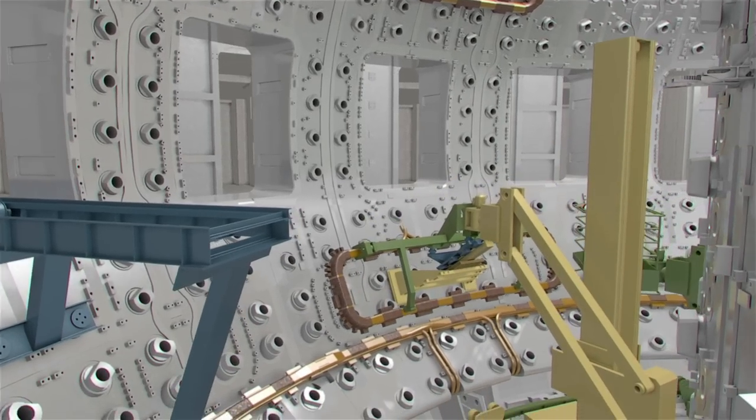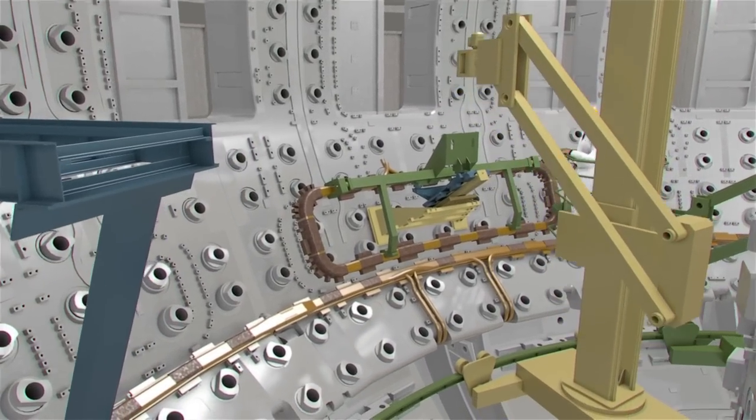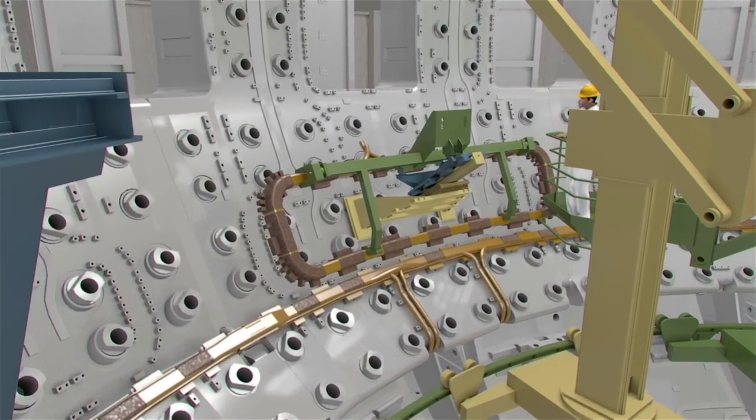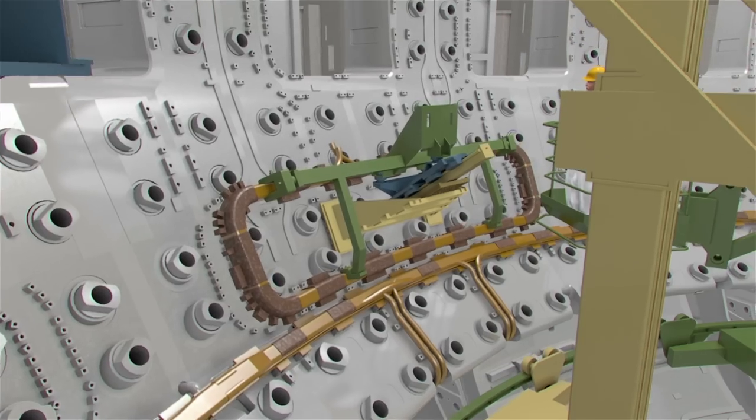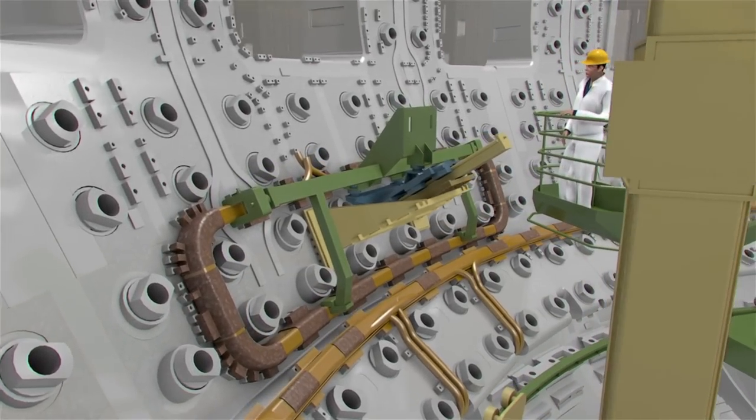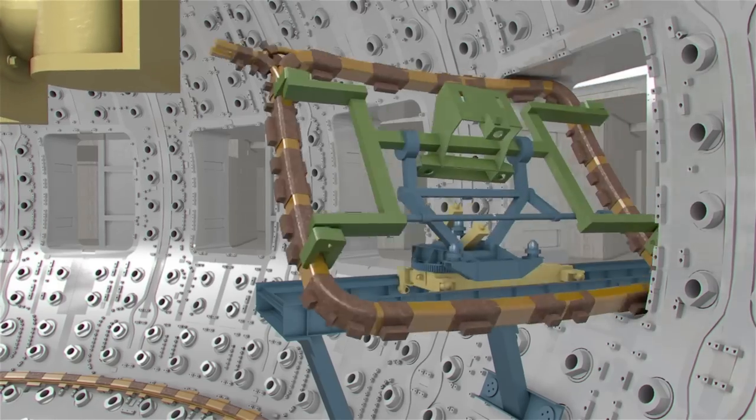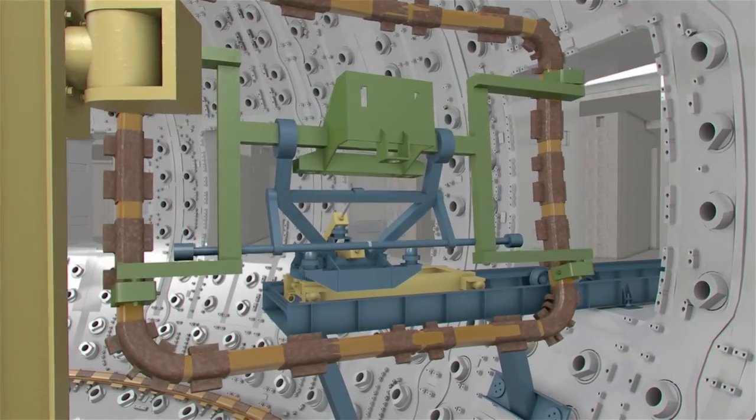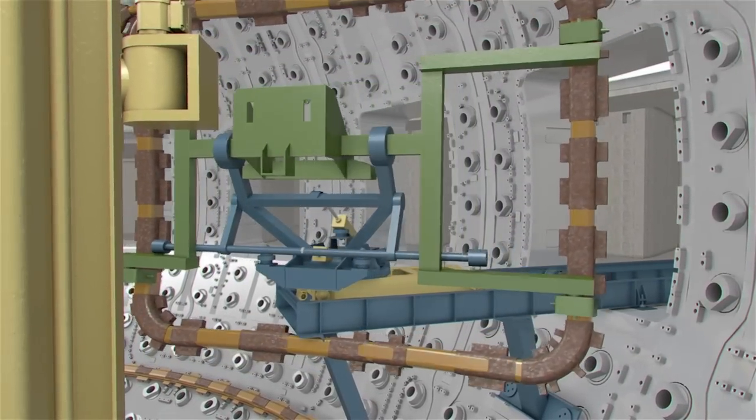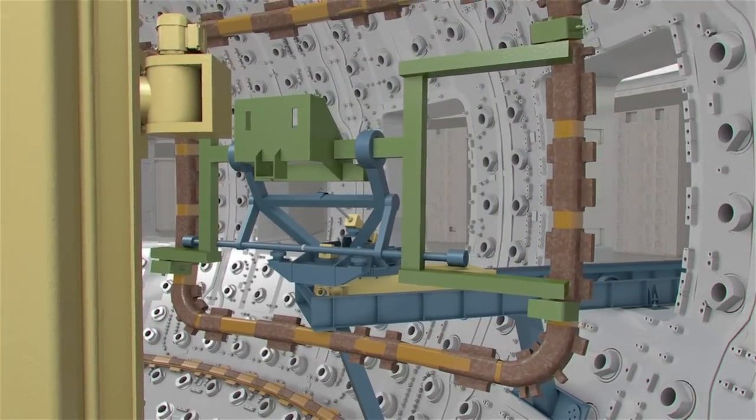Once introduced into the vessel, the ELM coils are presented in their final orientation to be collected and positioned by the in-vessel tower crane. Each coil and feeder has its own dedicated lifting frame, ensuring that the components can be safely lifted and manipulated.